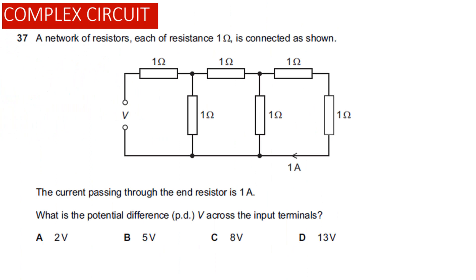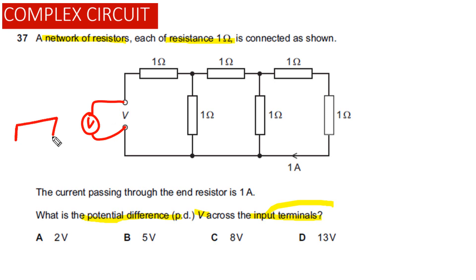For this question, a network of resistors is given to us and each resistor has a resistance equal to one ohm, so we can also say these are identical resistors. What we need to find is the potential difference V across the input terminals. If we attach a voltmeter across these terminals, we need to find the reading on this voltmeter.